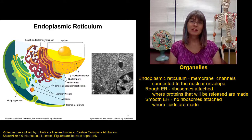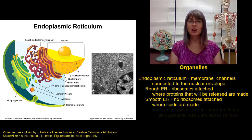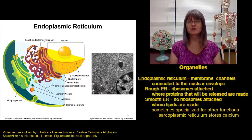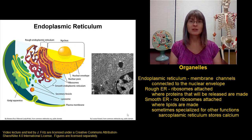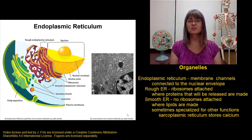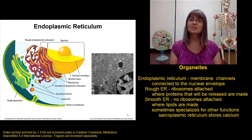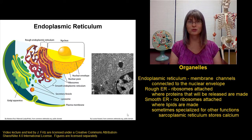The smooth endoplasmic reticulum is specialized for other functions in some cells. For example, in muscle cells the smooth ER is modified into what's called the sarcoplasmic reticulum, and it stores the calcium that's needed to trigger muscle contraction.